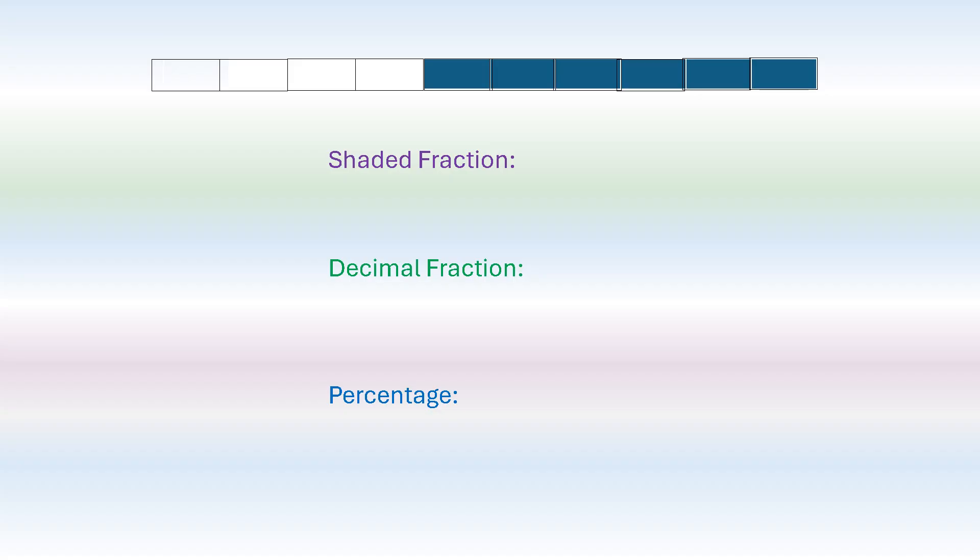Let's look at this bar. The first thing we're going to do is count how many pieces this bar is broken up into. So we count: 1, 2, 3, 4, 5, 6, 7, 8, 9, 10. It's broken up into 10 pieces. The question asks: what is the shaded fraction? We look at how many pieces are shaded — 1, 2, 3, 4, 5, 6. So 6 pieces are shaded. The numerator would be 6 and the denominator is the total number of pieces, which is 10. So it's 6 over 10.